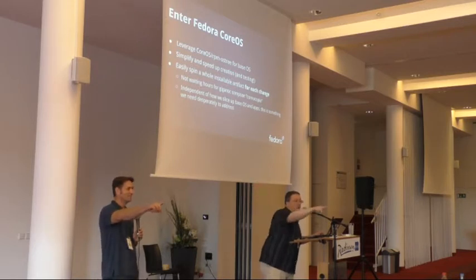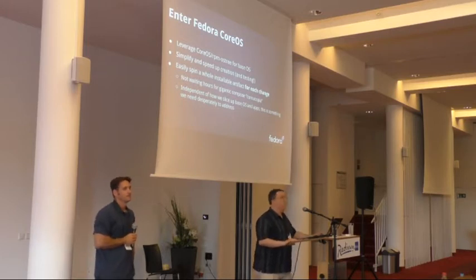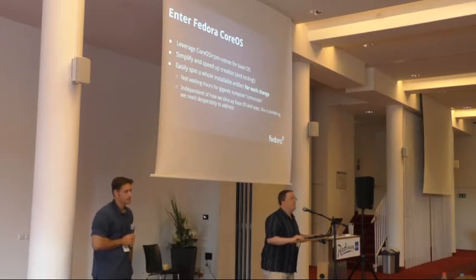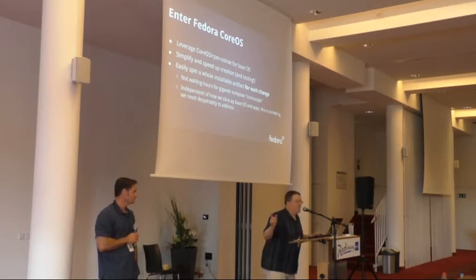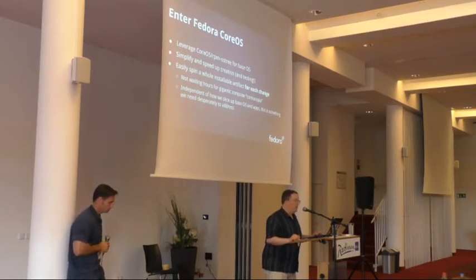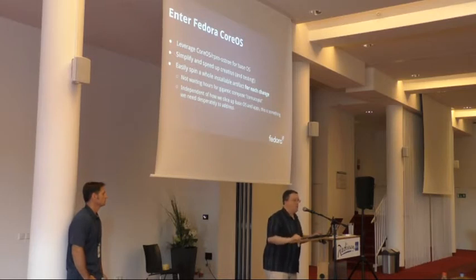Jim Perrin pointed out that CI is an iterative process, and having a certain toolchain that's broken does not keep us from using another toolchain. You can continue to put tests in your code, continue to do tests on a different platform until we have this framework in place, and then it'll be that much easier when you migrate over. CI is an iterative process, and having a broken toolchain does not keep us from writing tests or coming up with a testing framework we can agree on before we actually implement it.